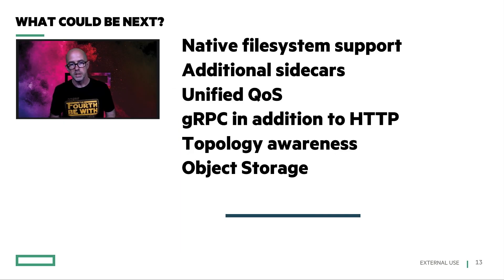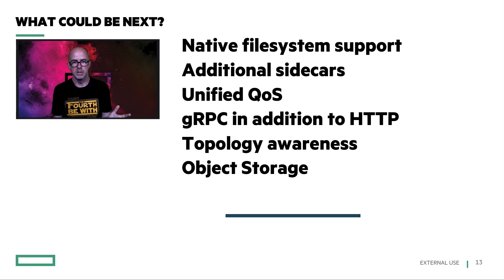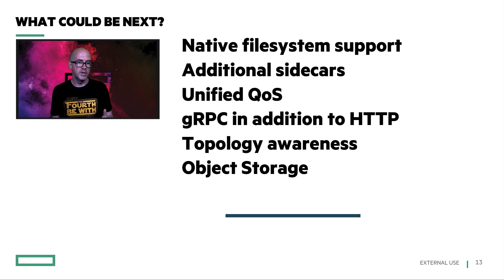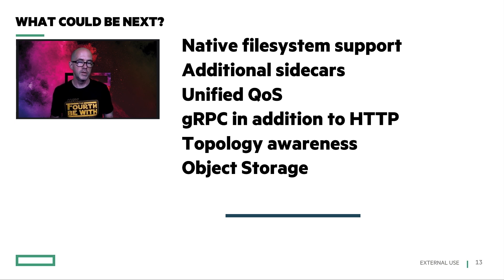What could potentially be next? This is currently a block storage framework; we have the NFS server provisioner, but we'd be very excited if somebody would implement native file system support — an NFS storage appliance, a Ceph appliance, or native cluster support. We want to add more sidecars to provide more value-add, maybe implement a unified QoS similar to what OpenStack has today. Some CSPs might work better over gRPC instead of HTTP. We don't have topology awareness today, which would be a neat feature for policy- and topology-based dynamic provisioning. Object storage is also a hot topic, currently being reviewed within the Kubernetes project, and that would also be a neat feature to add to the HPE CSI driver.